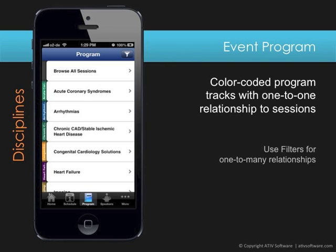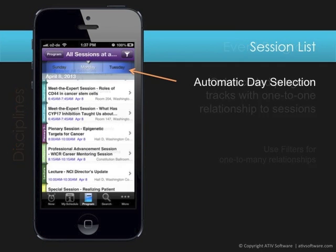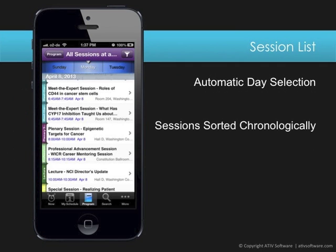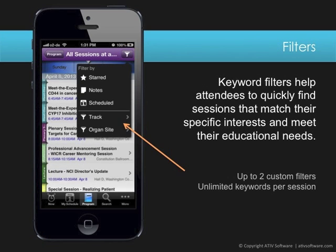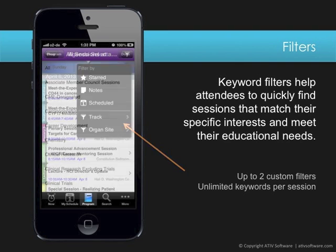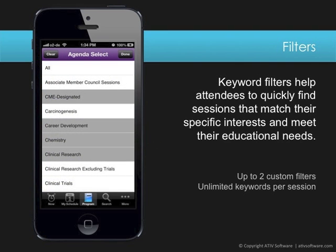When you select either a discipline or browse all sessions, you'll see a day selector and underneath a list of sessions sorted by time for that day. If sessions have meta tags, you can apply session filters with a custom label — in this example, track and organ site. Based on the keywords assigned to the sessions, the user now browses through a select set of sessions.